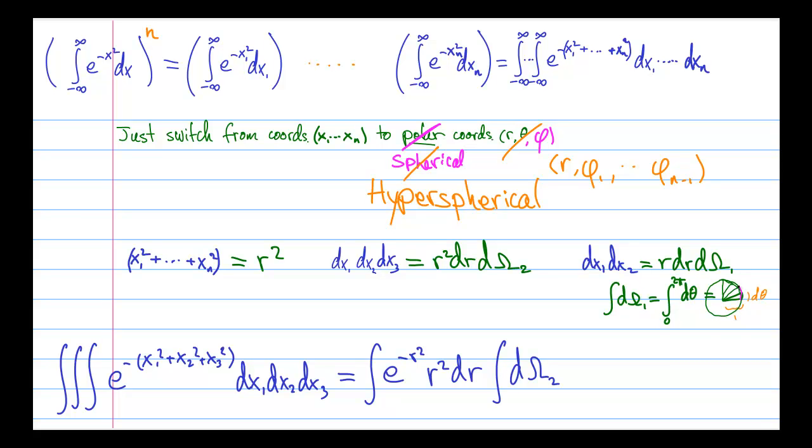So once we add up all the infinitesimal line elements, what we get is simply the perimeter of this circle, or I should say a disk. But because we're fancy mathematicians, we don't say disk, we say a two-sphere, a sphere in two dimensions.